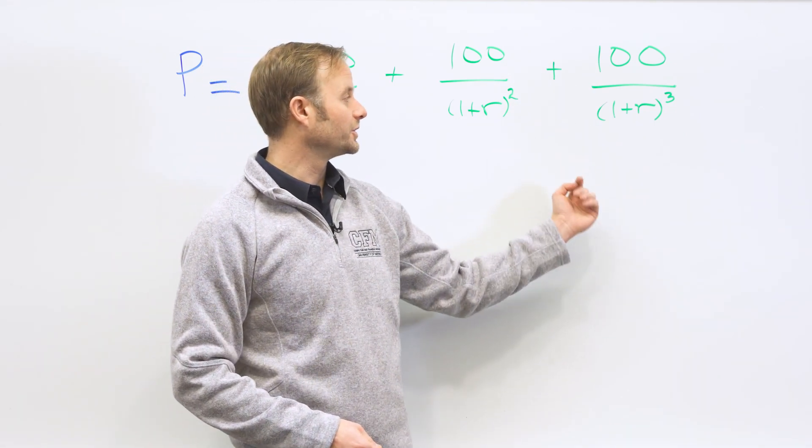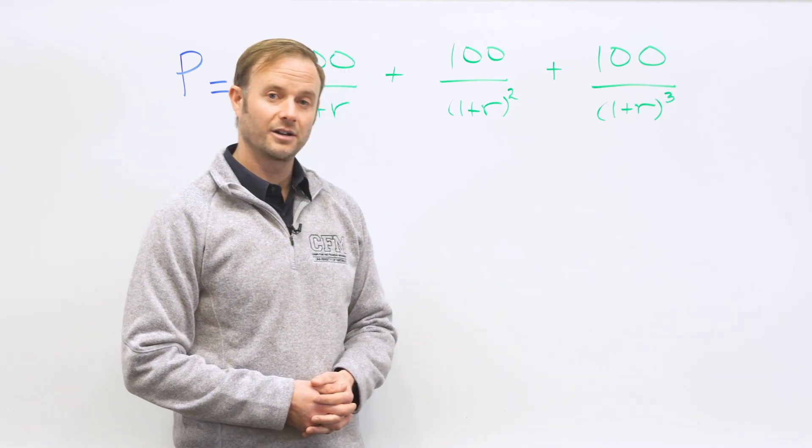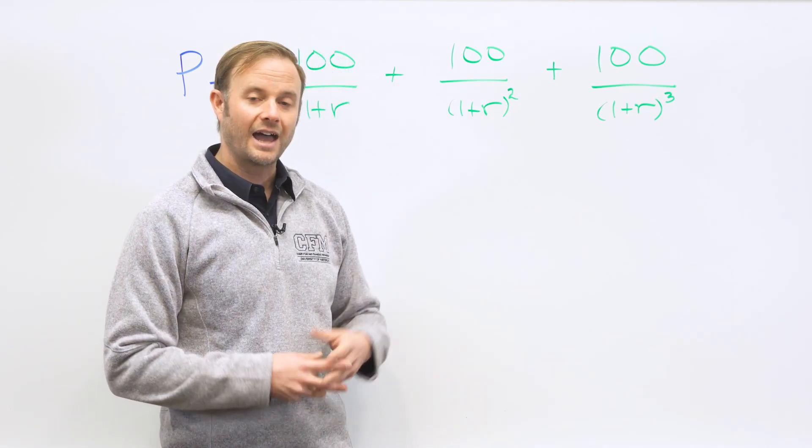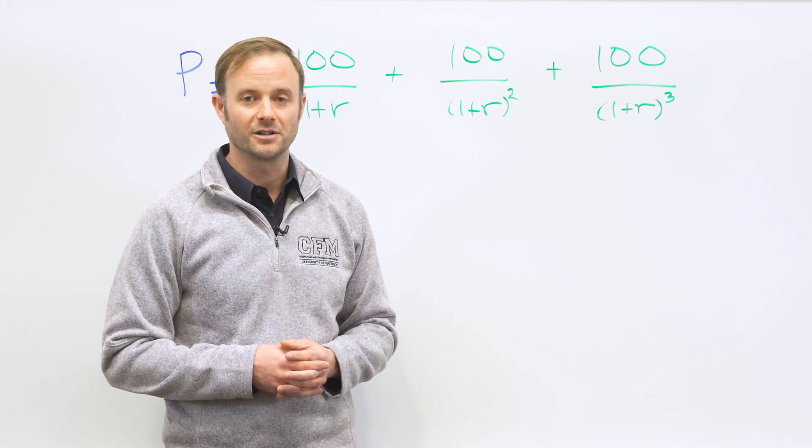The third $100 you're going to get in three years, well, simple pattern here, 1 plus r cubed. Add those three together, and you get the value of a bond which pays $100 for three years.